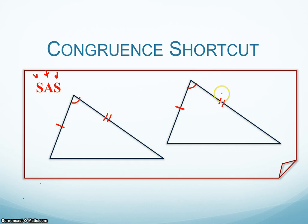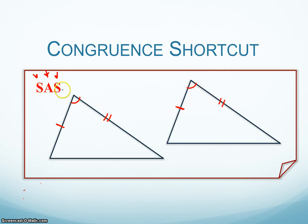It's really important that we go in order. I can go clockwise: side, angle, side — or counterclockwise: side, angle, side. It still reads the same. So if I know that this side is congruent to this side, and this angle is congruent to that angle, and this side is congruent to that side, then I have the side-angle-side property. And because I have the shortcut, I know that these two triangles are congruent. I don't need to know that every single angle and every single side is congruent.